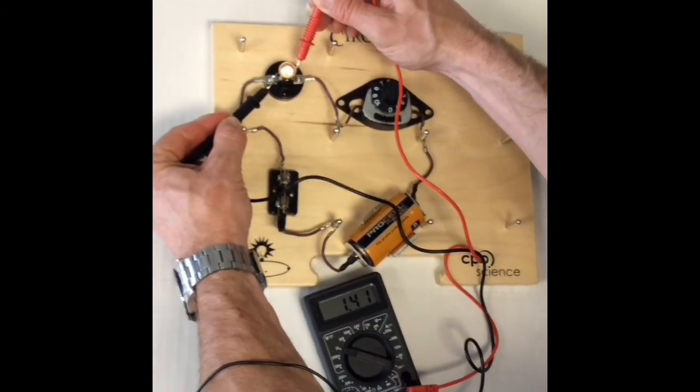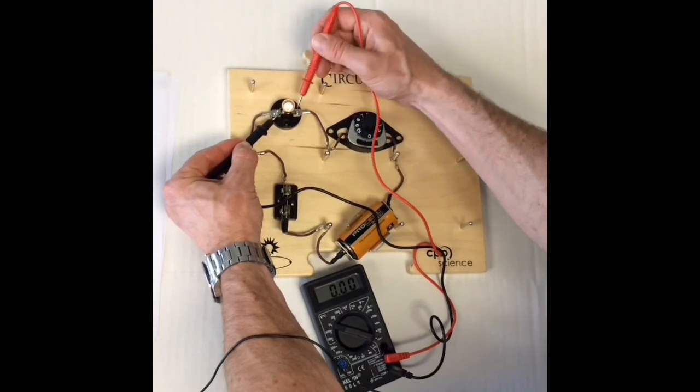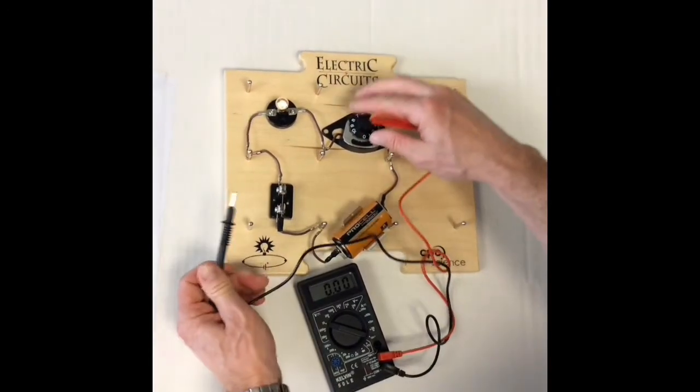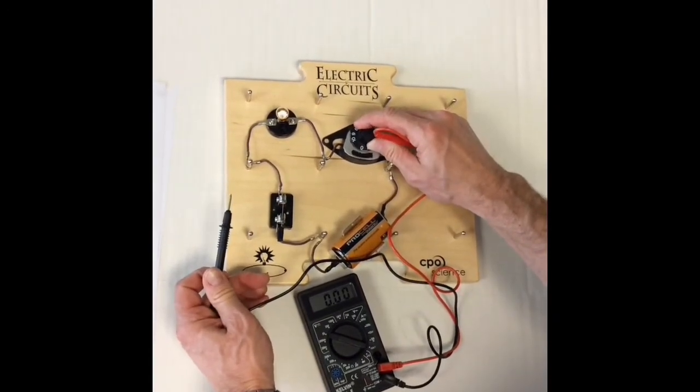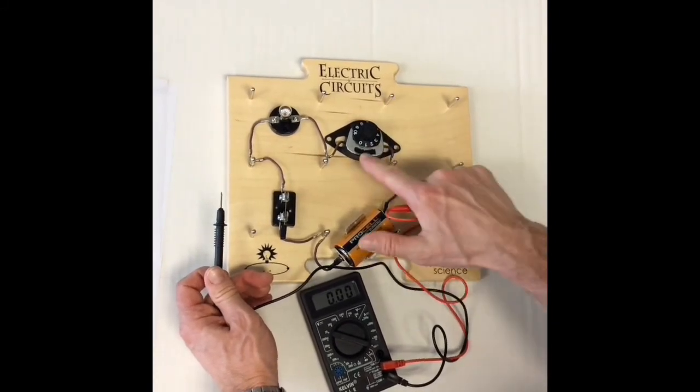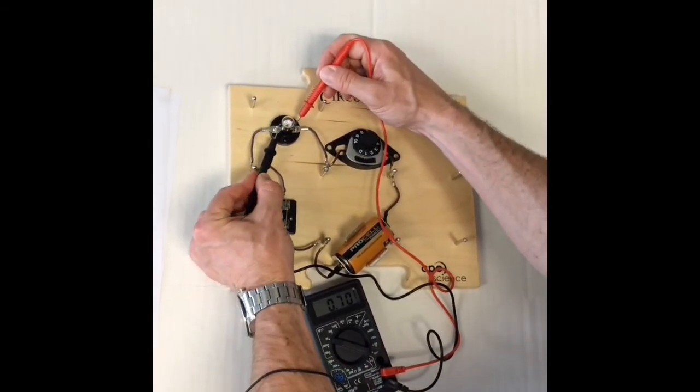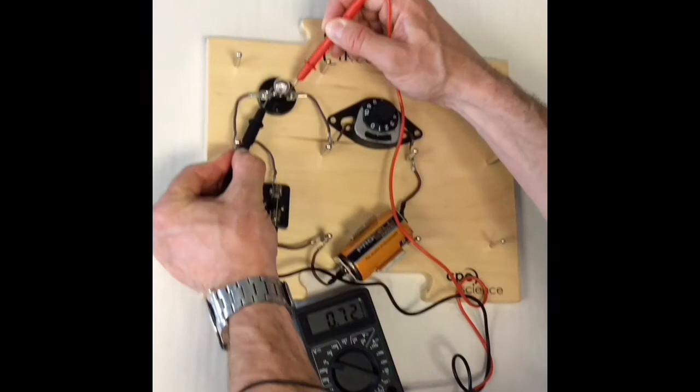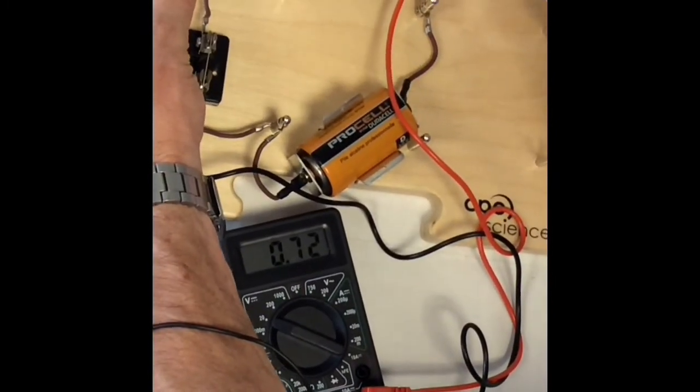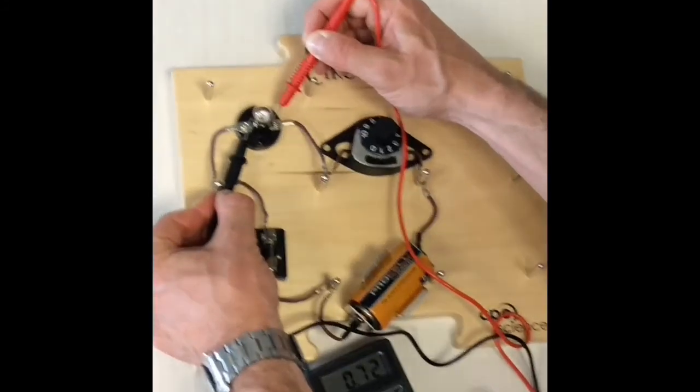Right now, we are looking at about 1.41 volts. We have a very bright light bulb. If I turn the potentiometer, so it is dimmer. Notice I move the potentiometer here. And I check my voltage across the light bulb. We are at 0.72 volts. And notice the bulb is much, much dimmer.